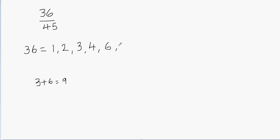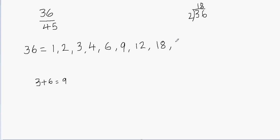7 is not a factor of 36. 8 is not a factor of 36. How about 9? Yes — 9 is a factor of 36 because 9 times 4 is 36. 10 and 11 are not factors. 12 is a factor because 12 times 3 is 36. And 18 is a factor because 36 divided by 2 is 18. The last factor is 36 itself. We've now listed all the factors of 36.